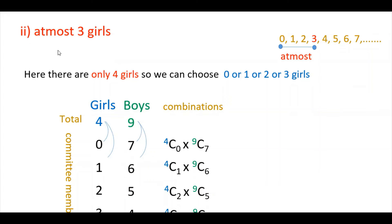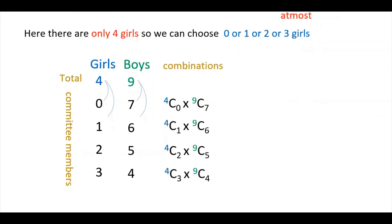This is the third case. In this case, you have to find the number of ways where there are at most 3 girls in the committee. That means there can be 0, 1, 2, or 3 girls — maximum 3 girls. There are only 4 girls total, so you use up to 3. For each sub-case you find the combinations and then add all of them to get the total.